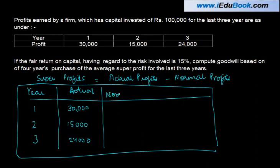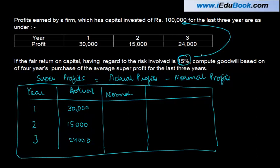The normal profit for a company operating in similar circumstances is 15%, and 15% of the capital employed which is 1,00,000. So if this were a normal company, it was expected to make 15% on the capital invested of 1,00,000, which is 15,000 each year — 15,000, 15,000 and 15,000.